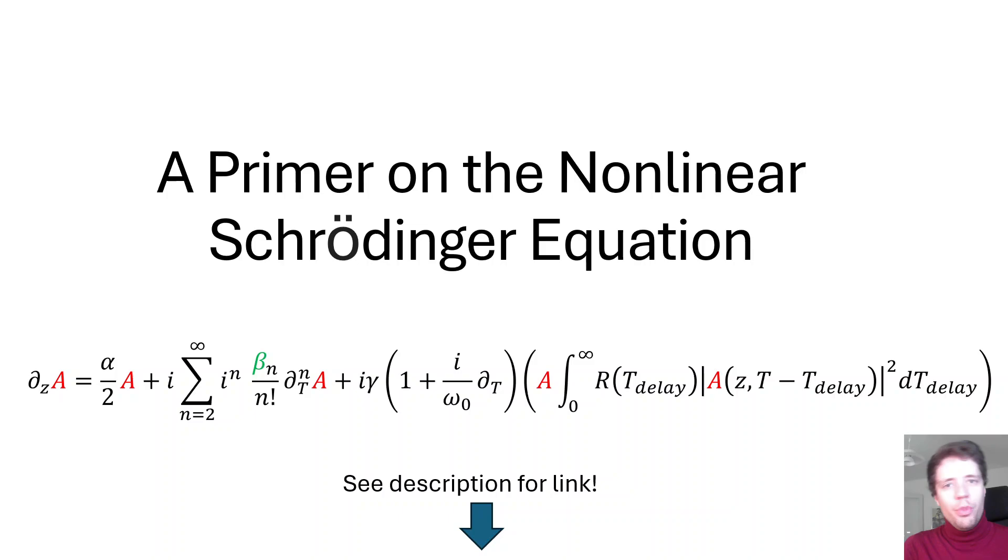Hello and welcome to this video where I'm happy to announce that I'm publishing a free ebook titled A Primer on the Nonlinear Schrödinger Equation, which is this wonderful equation right here that describes how light changes as it propagates through a medium where a so-called chi-3 nonlinearity is present.